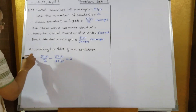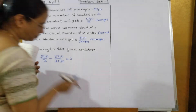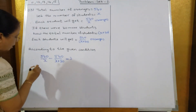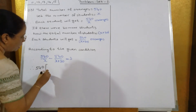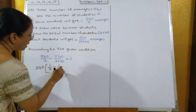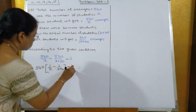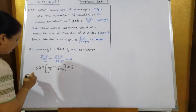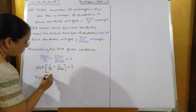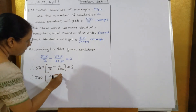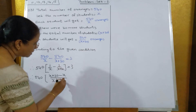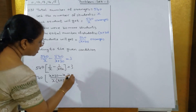The difference between each will be equal to 3 oranges. Now 540 is common in both terms, so take 540 outside. What remains inside the bracket is 1 upon x minus 1 upon x plus 30, equal to 3. Now equalize the denominator: 540 times x plus 30 minus x, all over x into x plus 30, equals 3.